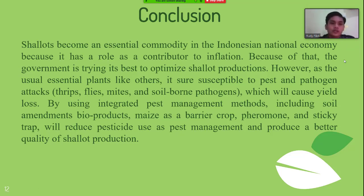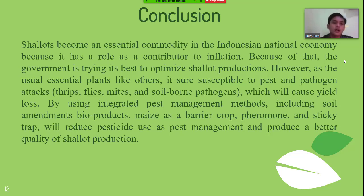In conclusion, shallots are an essential commodity in the Indonesian national economy because of their role as a contributor to inflation. Because of that, the government is trying its best to optimize shallot production. However, as with other essential plants, shallots are susceptible to pest and pathogen attacks — thrips, flies, mites, and soil-borne pathogens — which cause yield loss. By using integrated pest management methods, including soil amendments with bioproducts, maize as a barrier crop, pheromone traps, and sticky traps, pesticide use as pest management will be reduced and better quality shallot production will result.